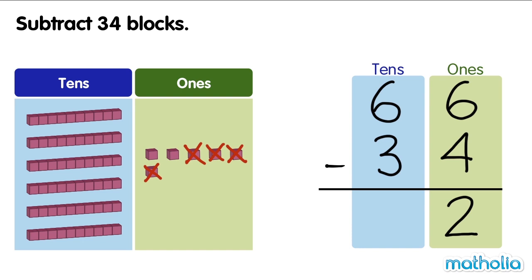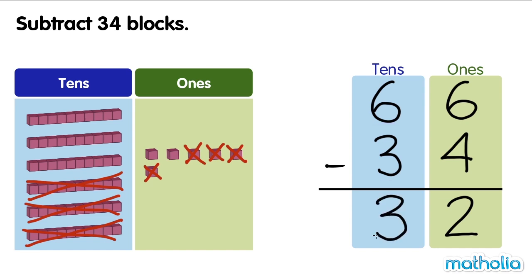Next, subtract the tens. 6 tens minus 3 tens equals 3 tens. There are 32 blocks left. 66 minus 34 equals 32.